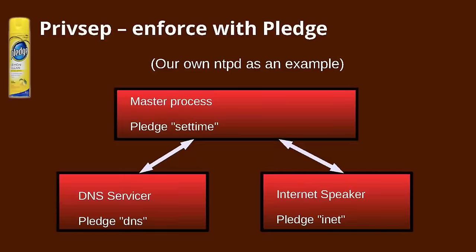Going back to the NTP example — since the processes were already separated, we pretty much just have to categorize them into these behaviors: one of them is an inet speaker, another is a DNS speaker, and the other is allowed to set the time. It seems really simplistic for an NTP daemon, but it's a goal we try to apply to each of our pieces of software to achieve this type of simplicity.